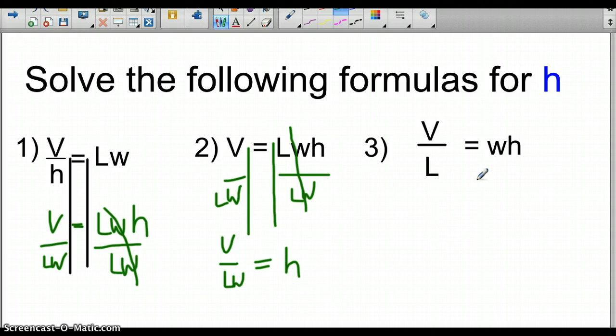And over here now, all we simply have to do is just divide both sides by w. And again, we'll end up with V over Lw equals h. So we had the same formula jumbled up, and I did this for a reason to show that no matter how we do all this together, what order we go in and things, we're still going to end up with the same solution for h in all the cases.